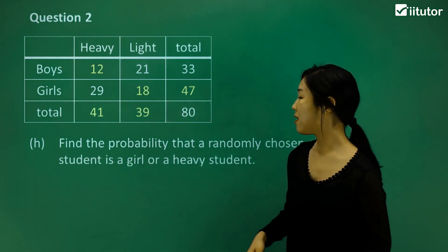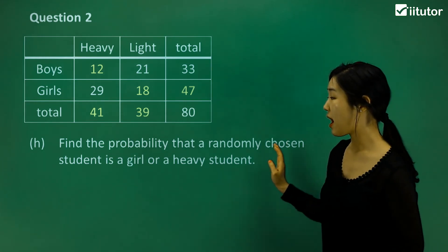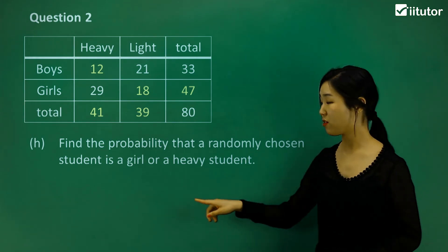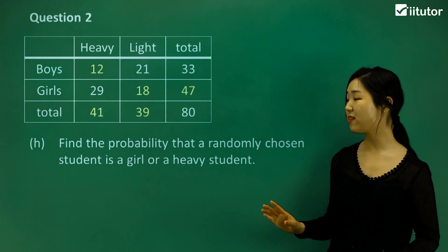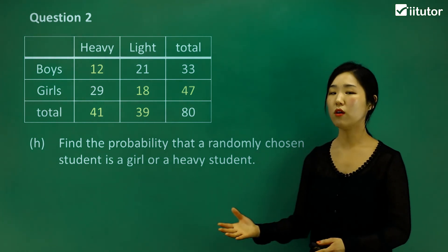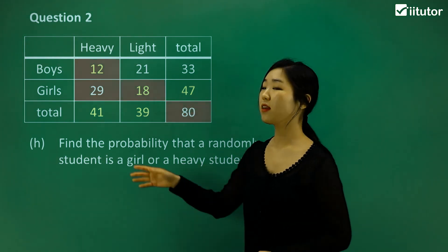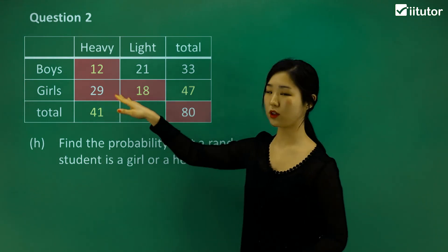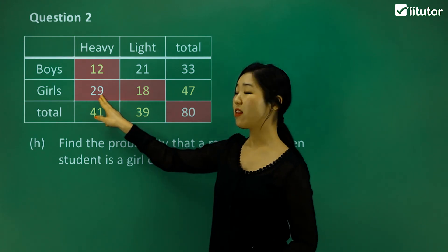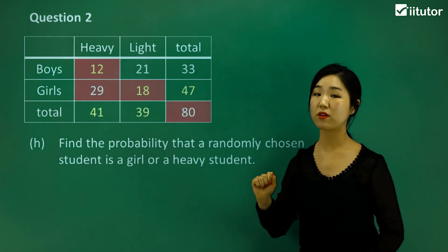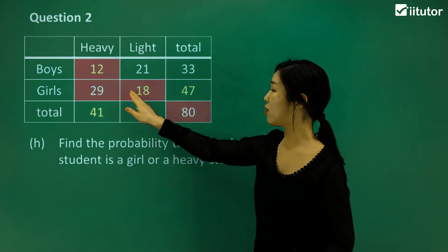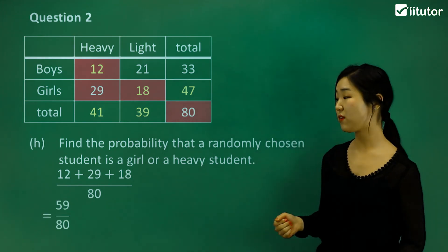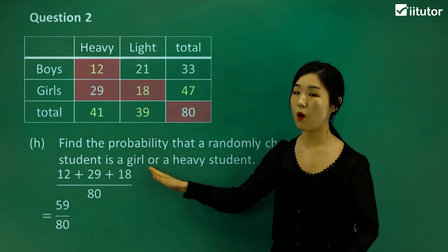Find the probability that a randomly chosen student is a girl OR a heavy student. Remember the difference between 'or' and 'and'. A girl can be heavy or light — we include all girls: 29 heavy girls and 18 light girls. We also include heavy boys (12), since they're also heavy students. Adding all three: 12 plus 29 plus 18 equals 59. So 59 out of 80 is the probability of being a girl or a heavy student.